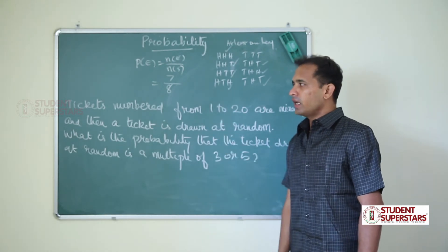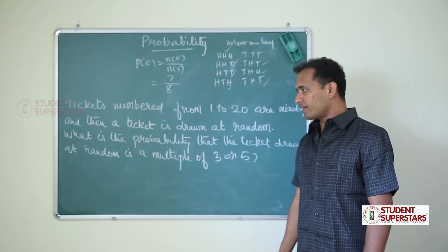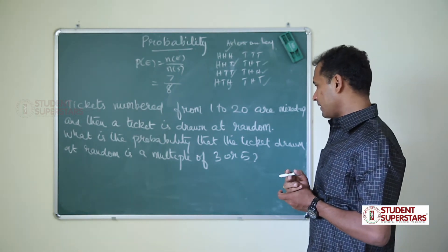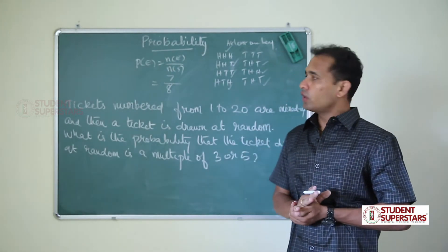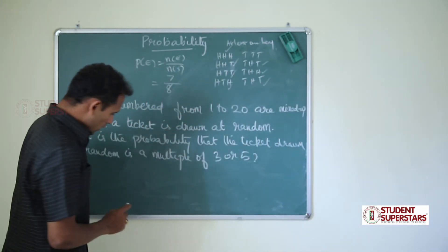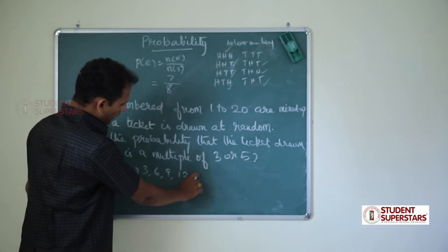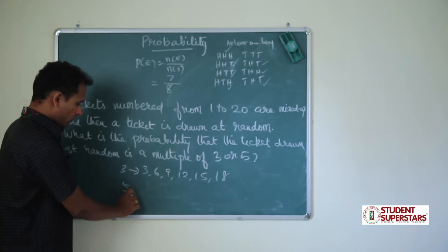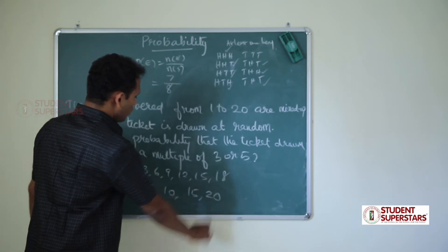Next question: ticket numbers from 1 to 20 are mixed up and a ticket is drawn at random. What is the probability that the ticket drawn is a multiple of 3 or 5? From 1 to 20, there are 20 numbers. Multiples of 3: 3, 6, 9, 12, 15, and 18. Multiples of 5: 5, 10, 15, and 20.